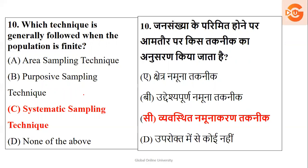Next: which technique is generally followed when the population is finite? We have covered sampling techniques in previous videos. If you need to use a technique for a finite population, it is called systematic sampling technique. So the right option is option C.